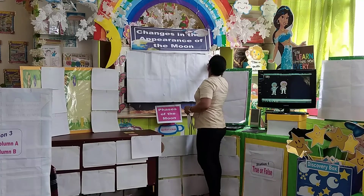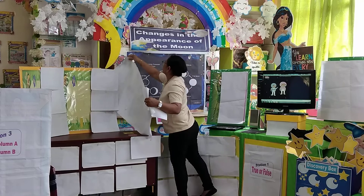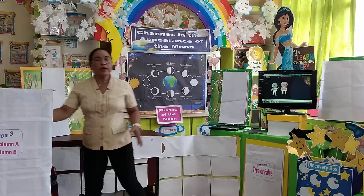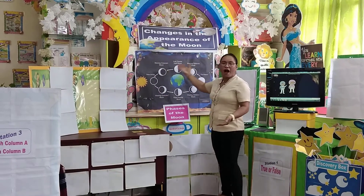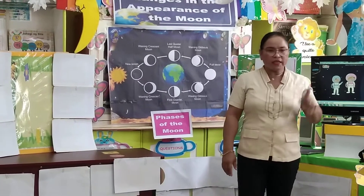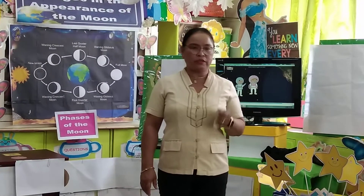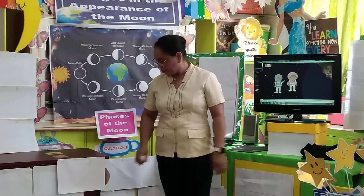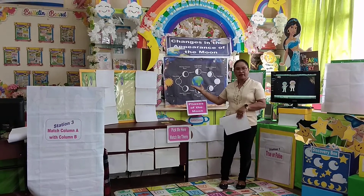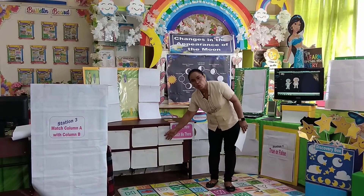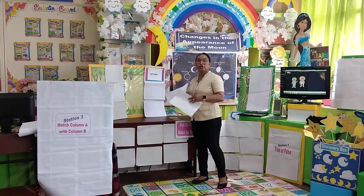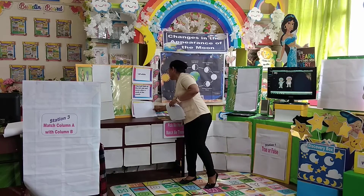Now if you try to take a look at this illustration, it will show that there are changes in the appearance of the moon. Now I will try to test if you have understood the video. We will have an activity called 'Pick Me Here, Match Me There.' You pick one card here, and then try to match that card to its description.